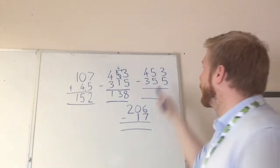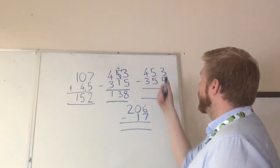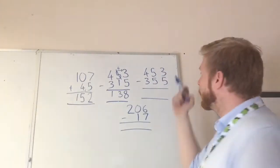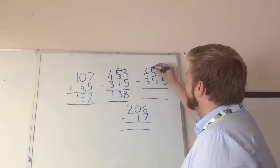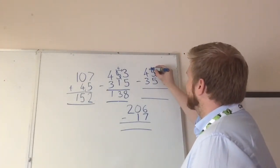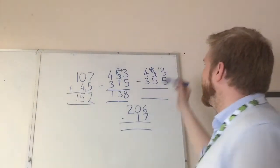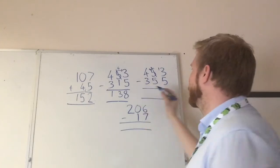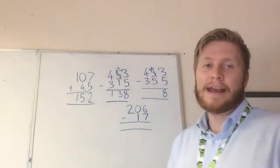We've got this one here now. We've got 453 taking away 355. Look at our first column. Again, we've got 3 taking away 5, which we can't do. We need to do exactly the same. So we take a 10 from there. So we make that 4 tens rather than 5 and put that into our units column. Now we have 13 taking away 5, which we've already done. So we know that's 8. Okay, now we move on to the next column.